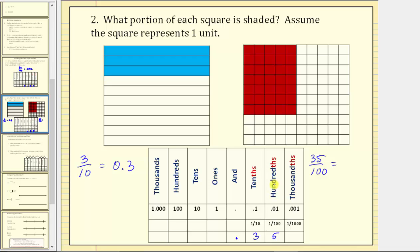And again, we normally put a zero in the ones place value. We read this decimal just like the fraction as 35 hundredths. 35 hundredths as a decimal is equal to 0.35.